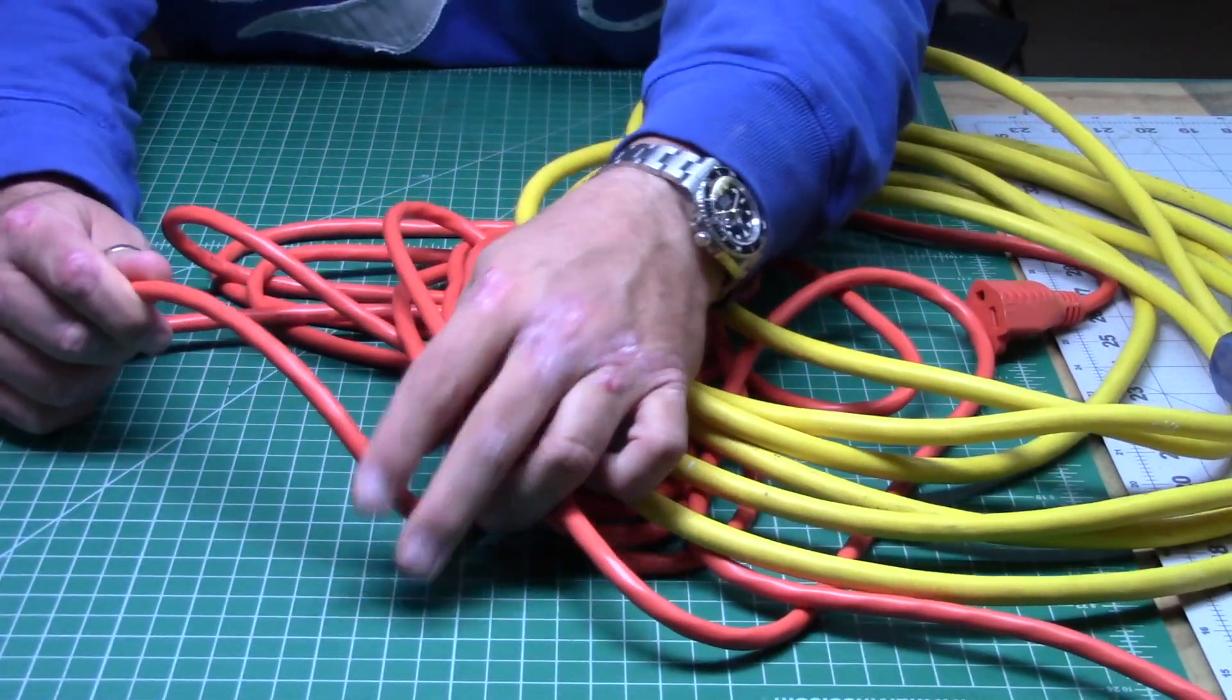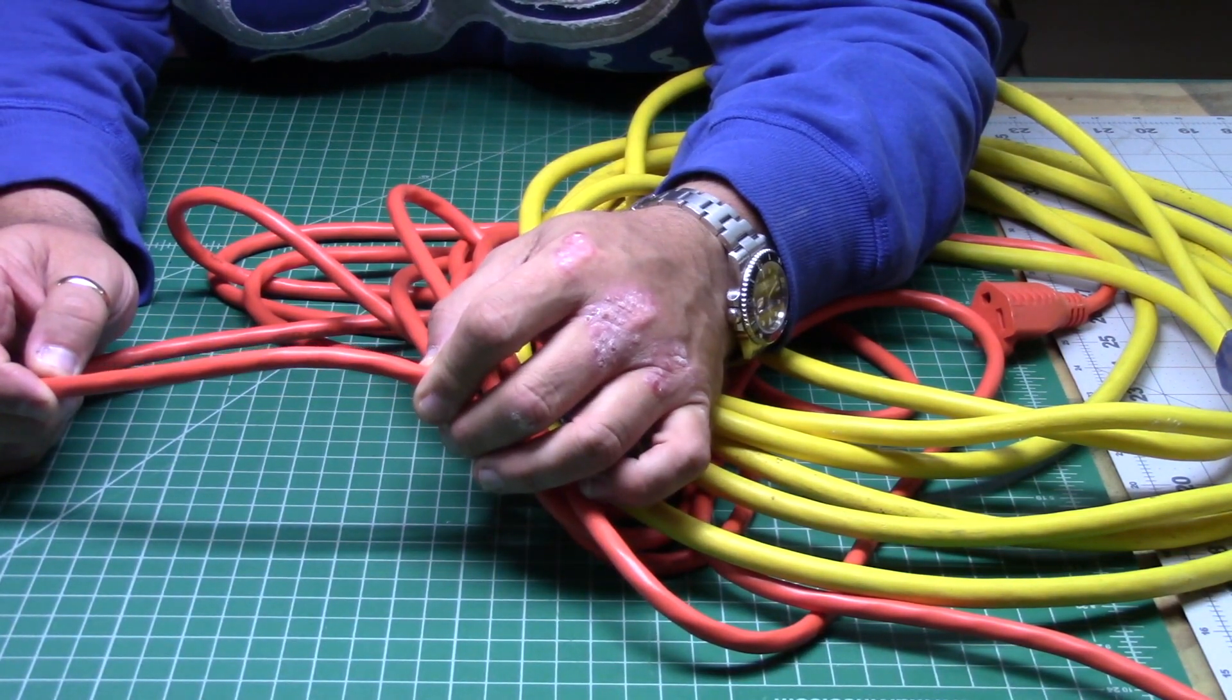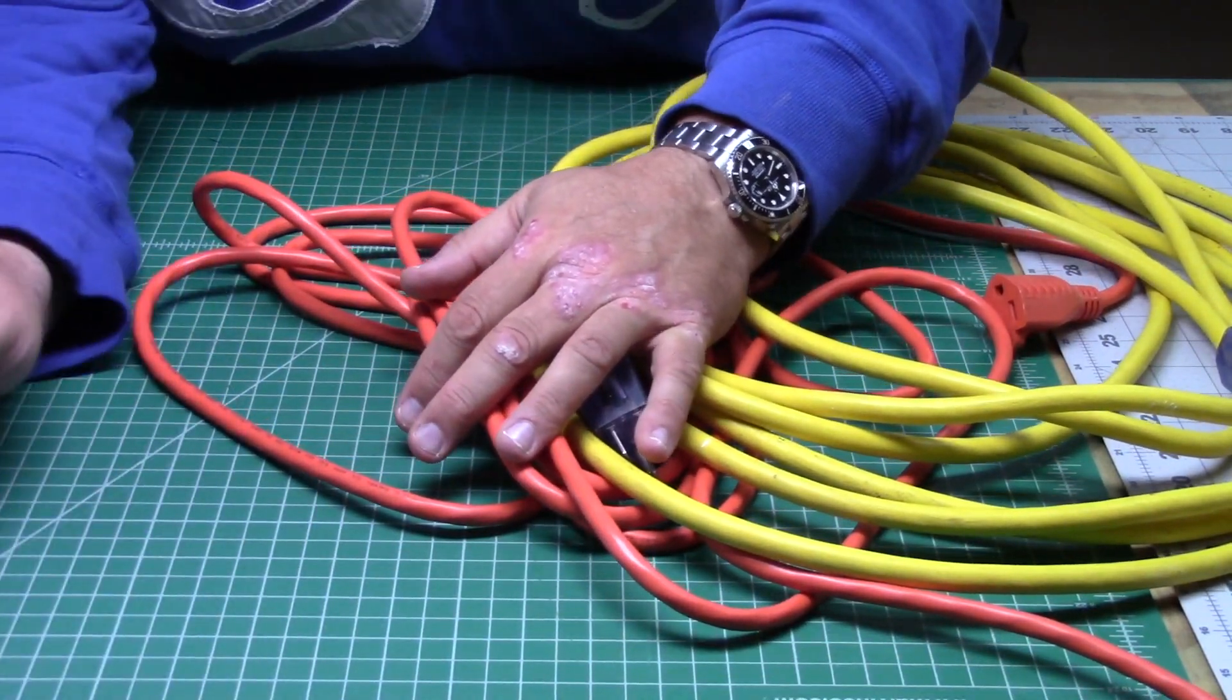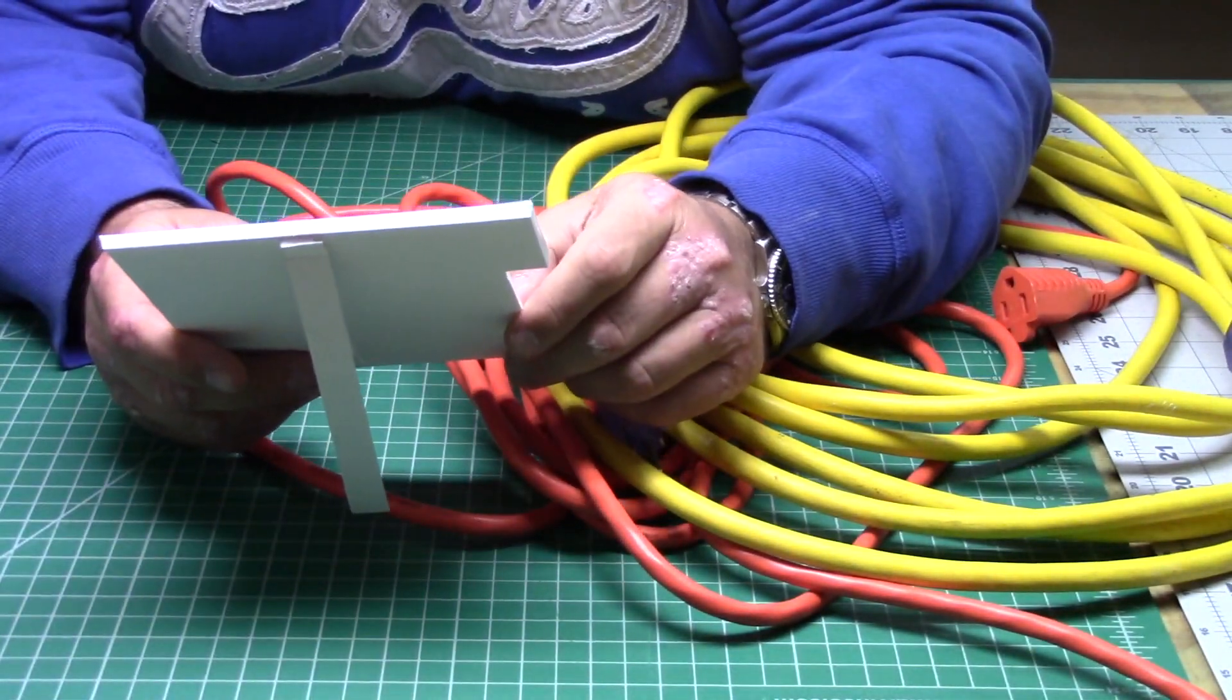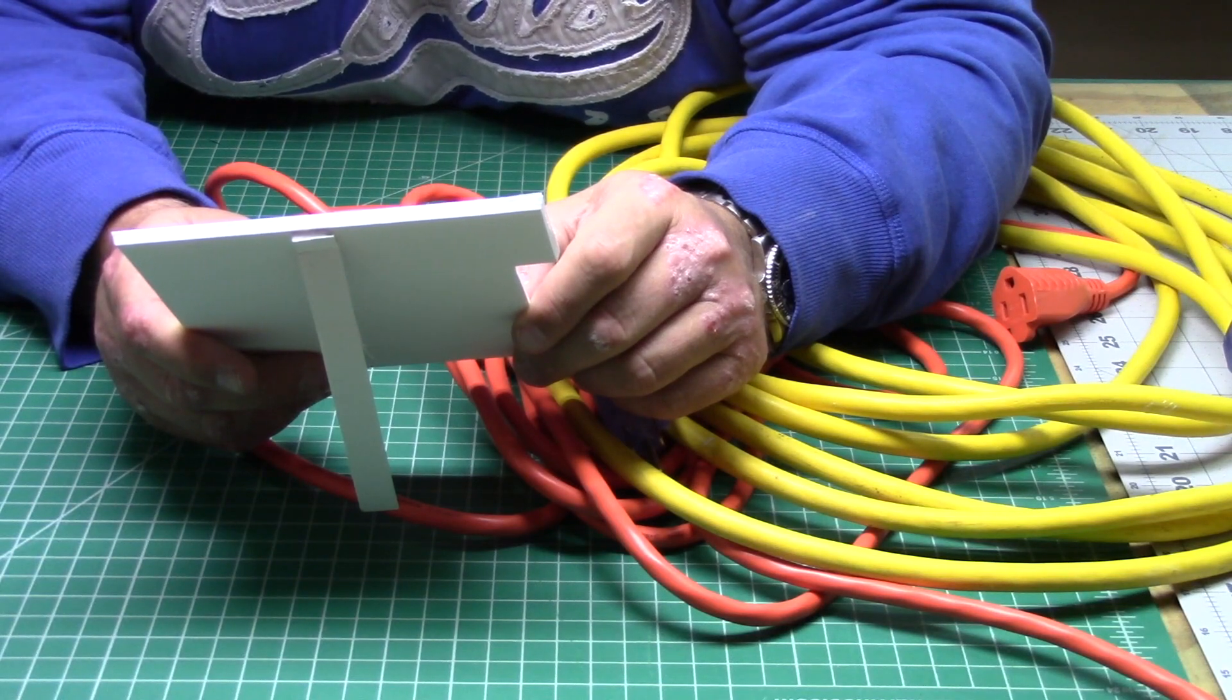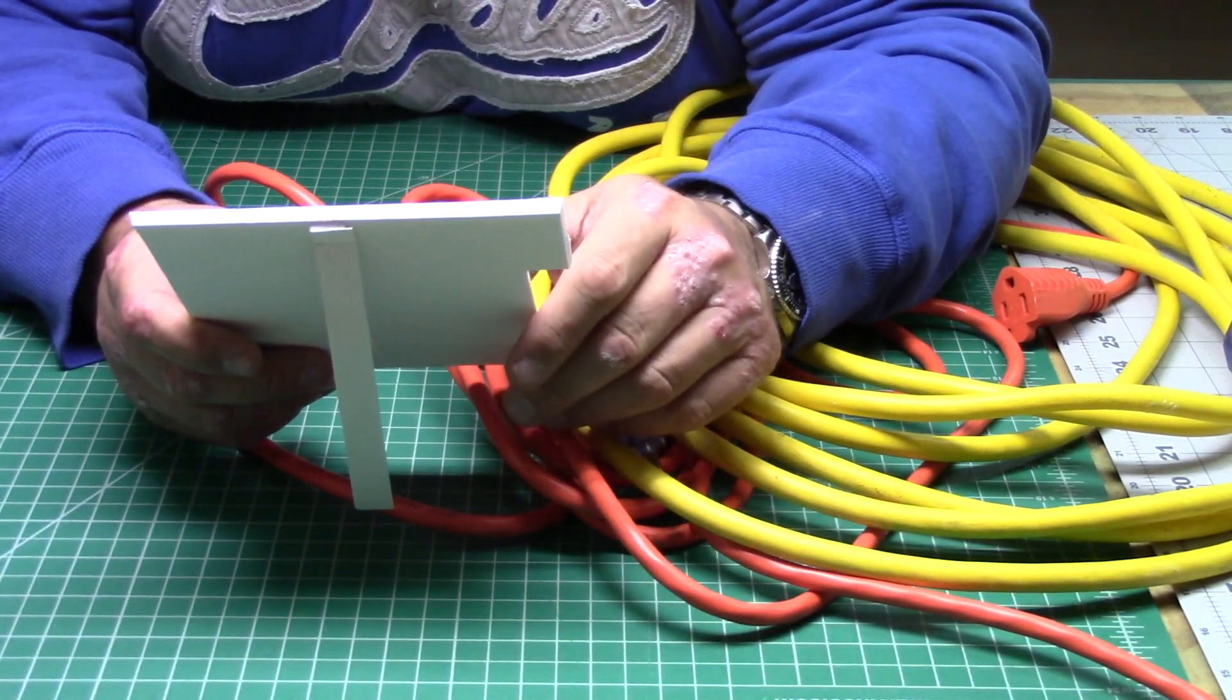Right here, it's printed right on the extension cord in black. It says this is 16 gauge cord. Now I made a little chart for you guys. It says 16 gauge cord up to 50 feet you can run 13 amps through it. Up to 100 feet you can run 10 amps through it. 150-200 feet, don't use the 16 gauge extension cord.